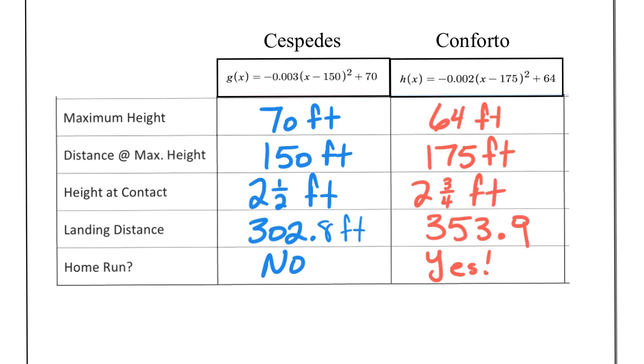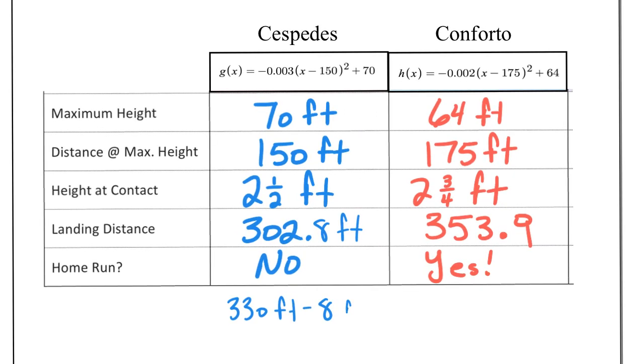And for the home run, in this case in my little sample here, I was looking at Miami, the Marlins, where their wall was 330 feet from home plate and 8 feet in the air or 8 feet tall. Now just by looking at Cespedes, we see that his ball lands at 302.8 feet, not even reaching the wall. So without even looking at a graph, just by looking at this table alone, we obviously know this is not going to be a home run. It's going to be around 27.2 feet short of even hitting the wall. So obviously it's not going to pass over the wall.